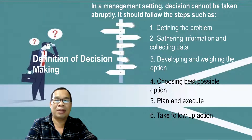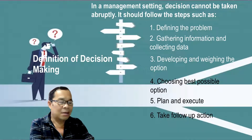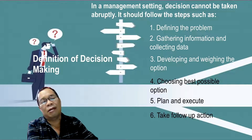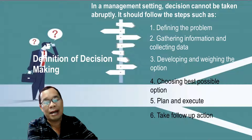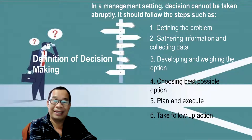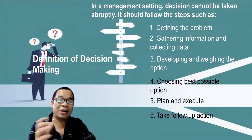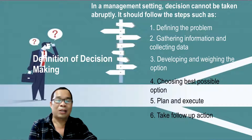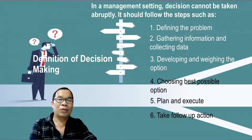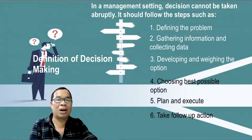In a management setting, a decision cannot be taken abruptly — you cannot just decide right then and there without having some considerations and without having a process. Otherwise, in the future, you are going to fail. When you fail as a manager, it would mean failure to the entire organization because the entire organization's future is at stake and is in your hands as a manager. So you have to have a sound decision, and there is a need to follow some process.